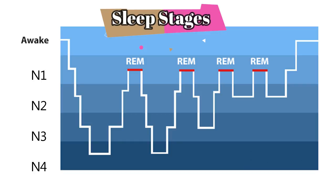Here's a very important thing you need to know: every time you go back to stage one — for example when you go one, two, three, four, and then four, three, two, one again — you're going to enter something we call REM, or rapid eye movement stage. You reach the rapid eye movement stage each time you complete one cycle.